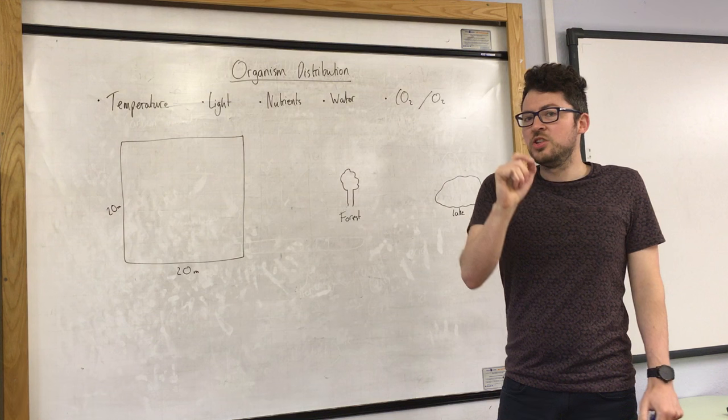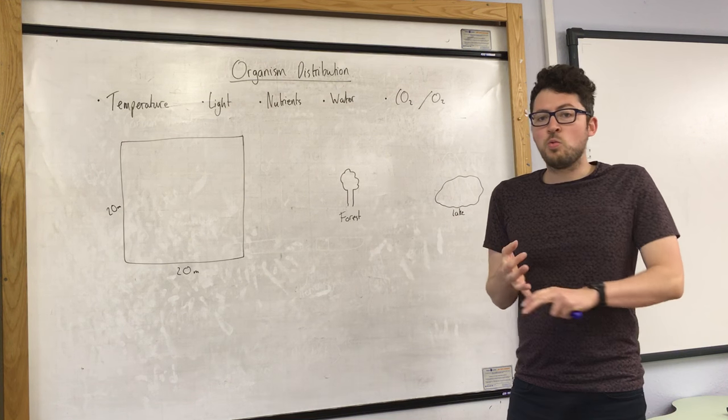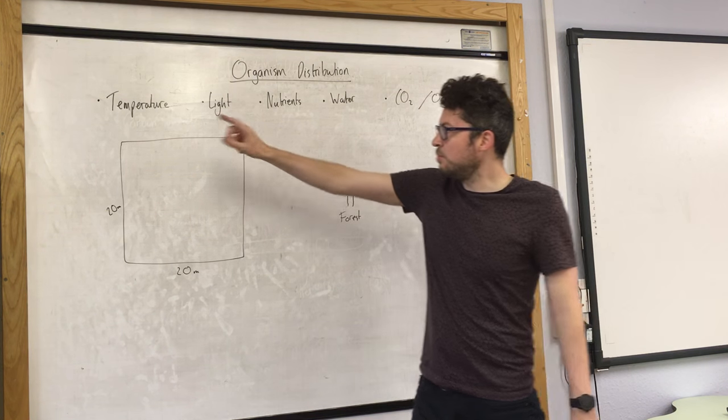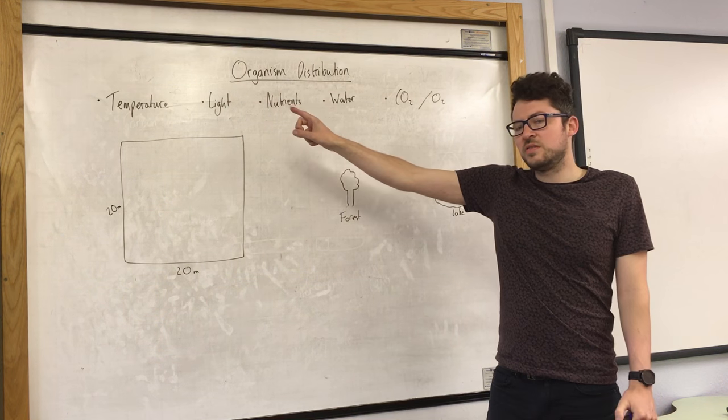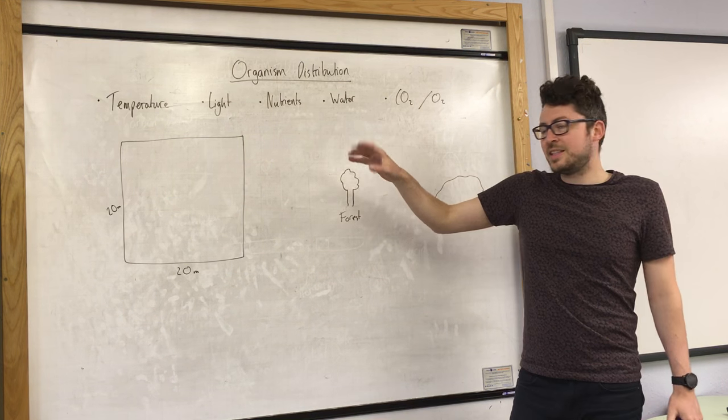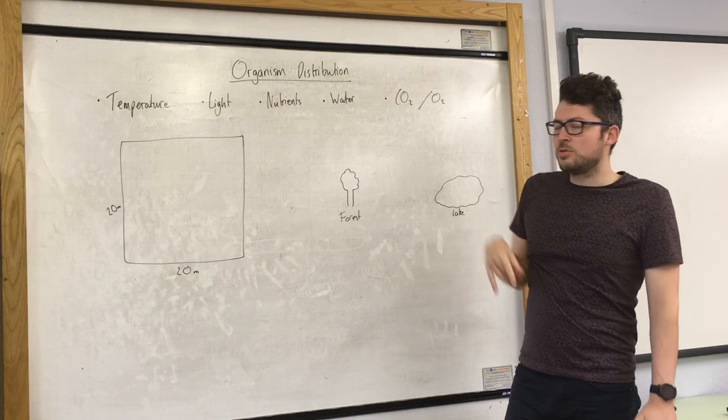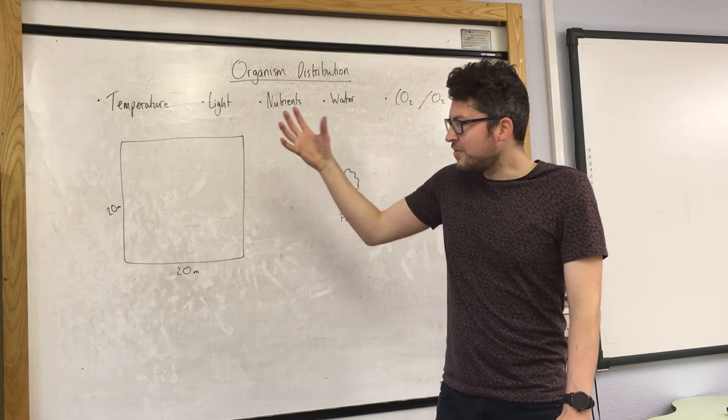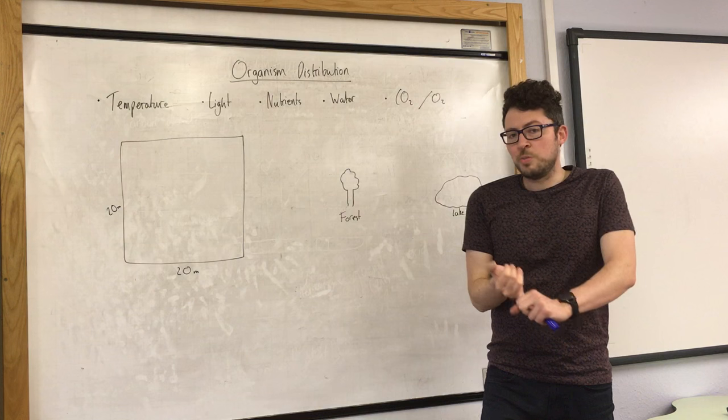Now there are five physical factors, by physical I mean non-living factors that could affect where organisms live. And they are temperature, light, nutrients availability, water availability and availability of CO2 and oxygen. Now these factors affect where living things will be found.